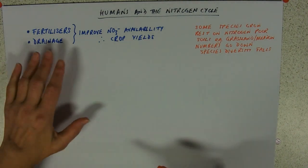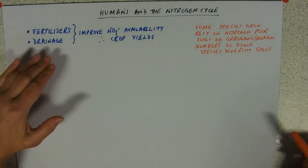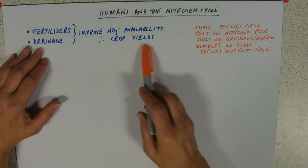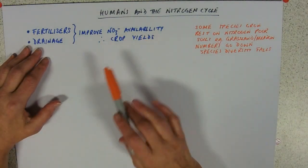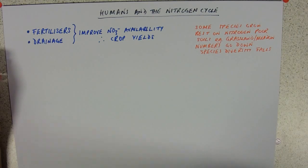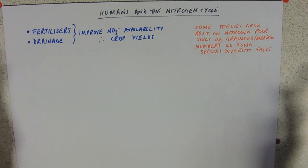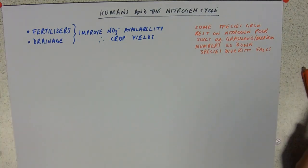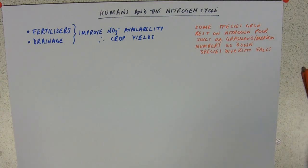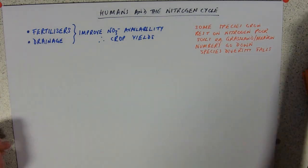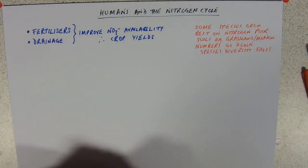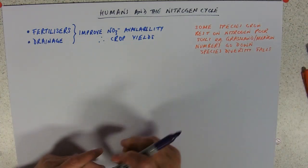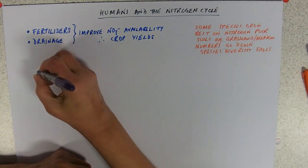Digging drainage ditches not only improves nitrogen availability but takes away water, so plants that prefer wetter habitats will suffer as a result. And of course there is the process of eutrophication.